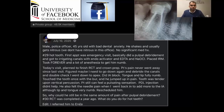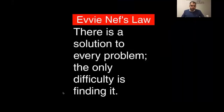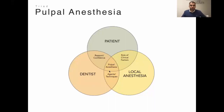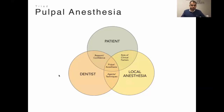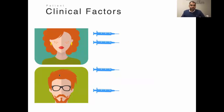Is there a solution? Yes — there is a solution to every problem; the difficulty is finding it. The core problem is pulpal anesthesia. You can numb the lips, tongue, and everything else, but the pulp remains the challenge. There is a triad of factors that could lead to anesthetic failure: patient factors, local anesthetic factors, and clinician technique or choice of anesthesia.